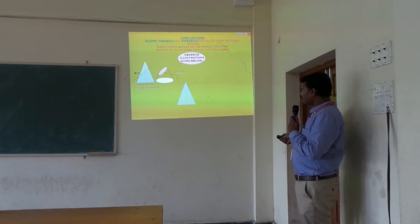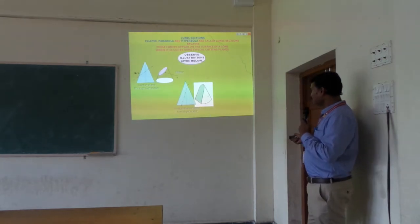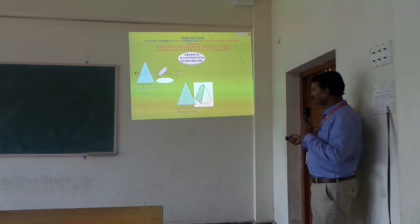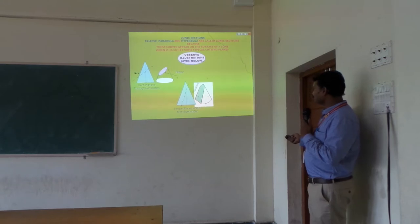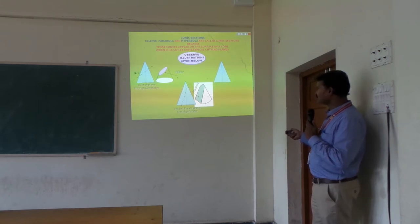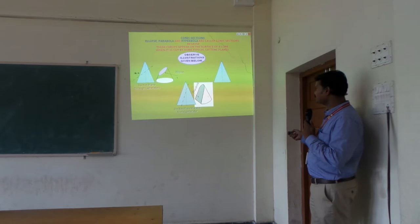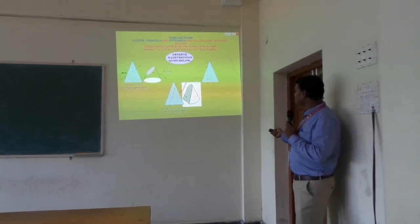Here is another cone. If I cut the cone parallel to the generator, with the section plane passing through the end generators and parallel to this end generator, the remaining portion forms a parabola. After applying the section and removing that portion, the remaining shape is called a parabola.